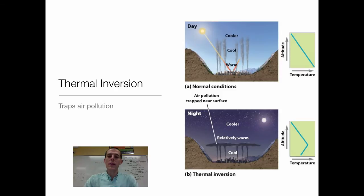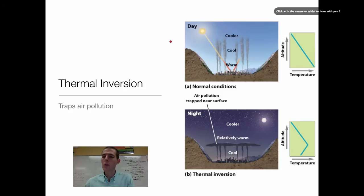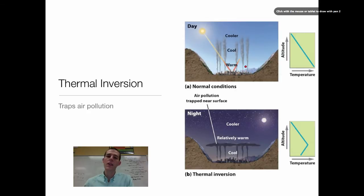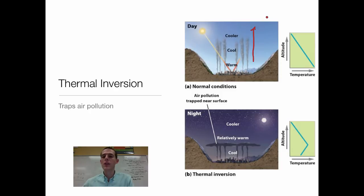The next topic I want to talk about is a thermal inversion. A thermal inversion is a situation where air temperature stops pollution from rising up and being carried away — it traps air pollution in a given area. Under normal conditions, the higher you go up in the atmosphere, the colder the air gets. This is really important because as long as air is warmer than the air around it, it will keep rising up. So under normal conditions, this polluted air is warmer than the cool air around it, it keeps rising, and eventually gets up into the higher atmosphere and is carried away by the wind.